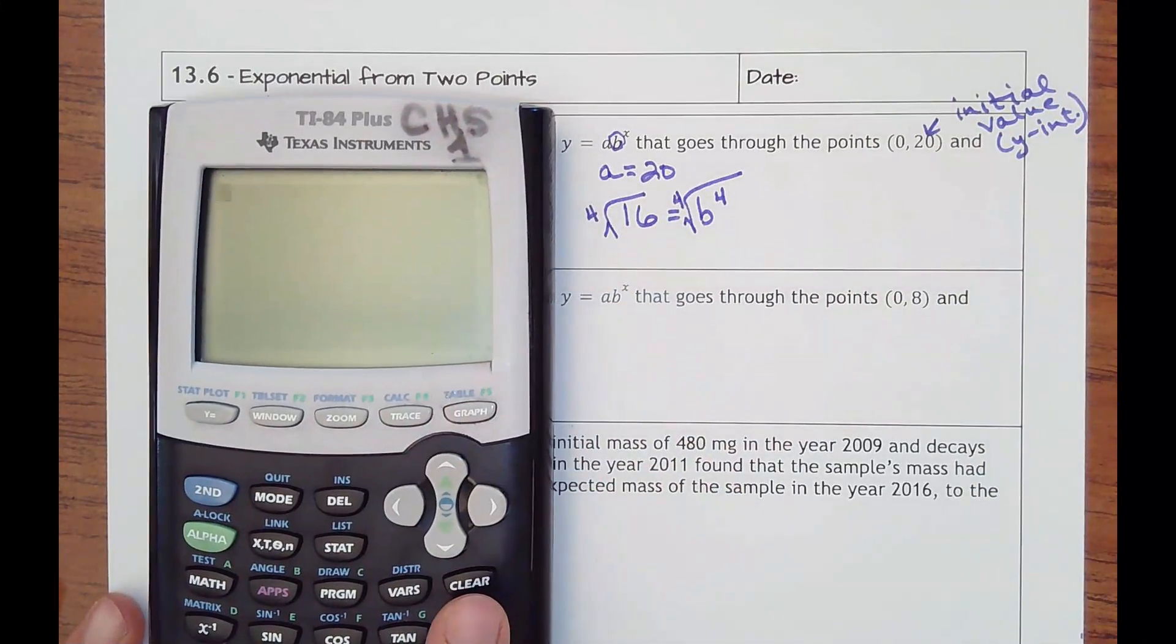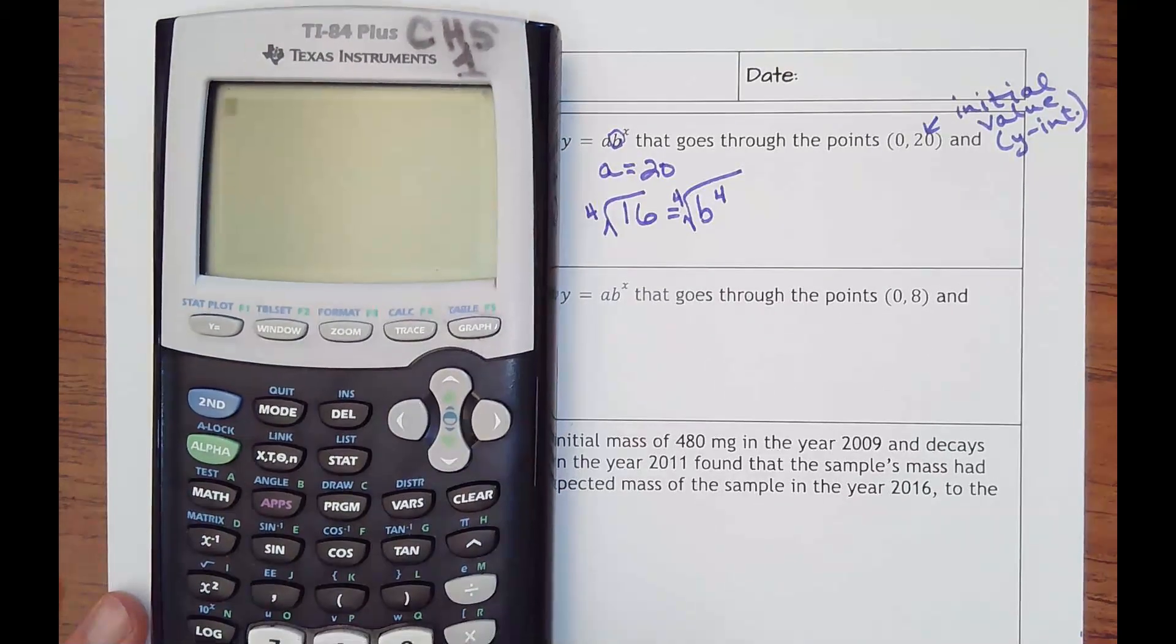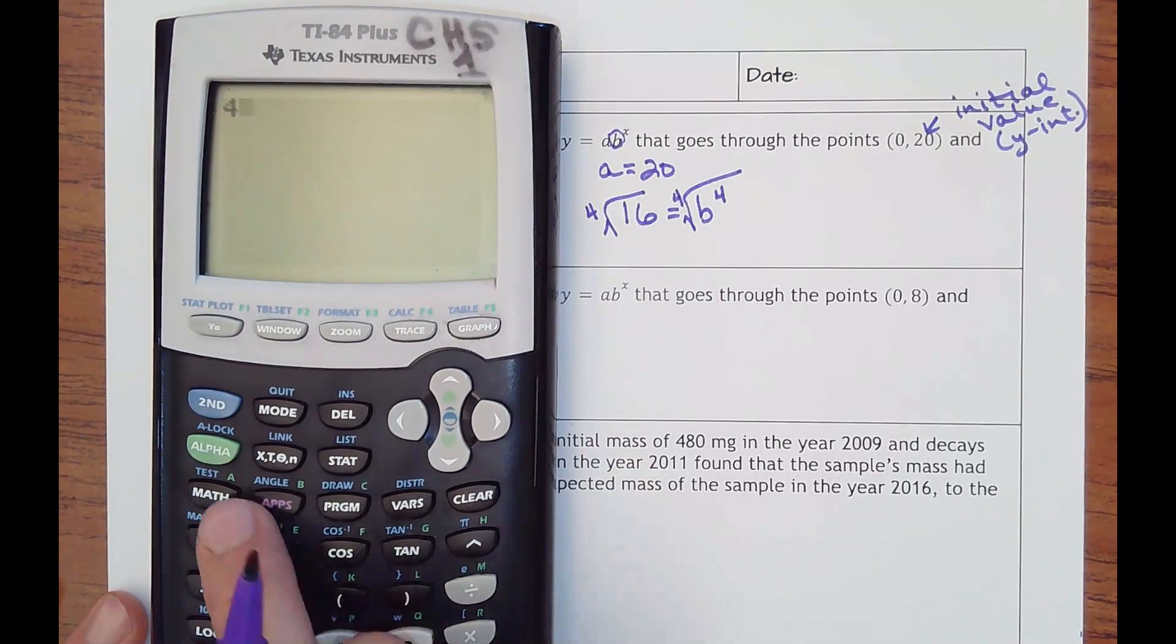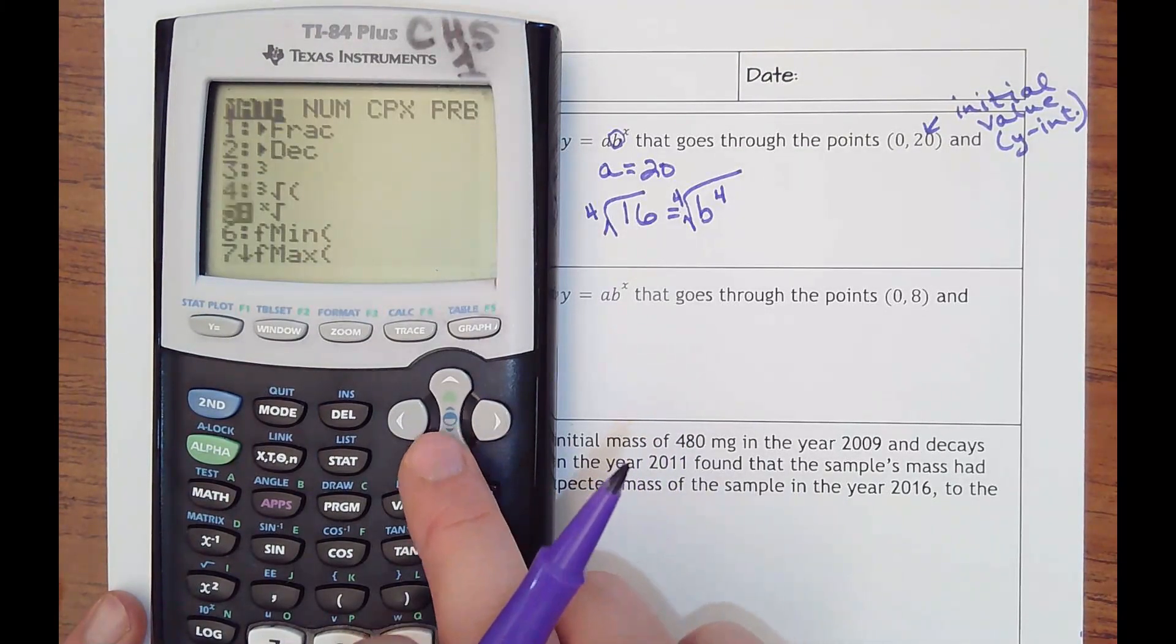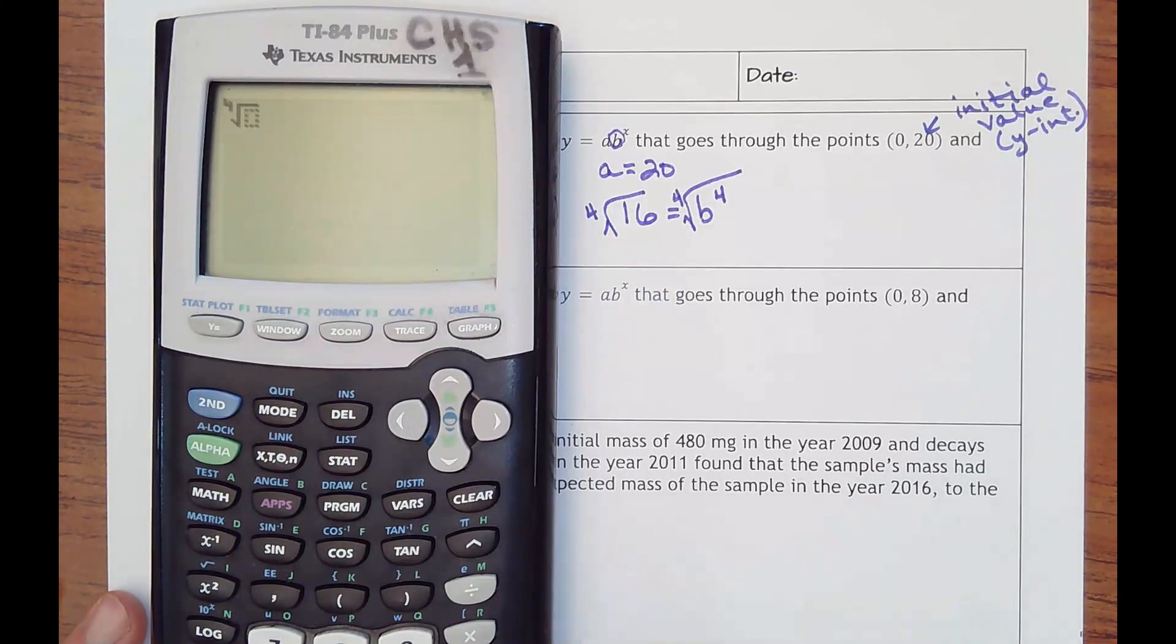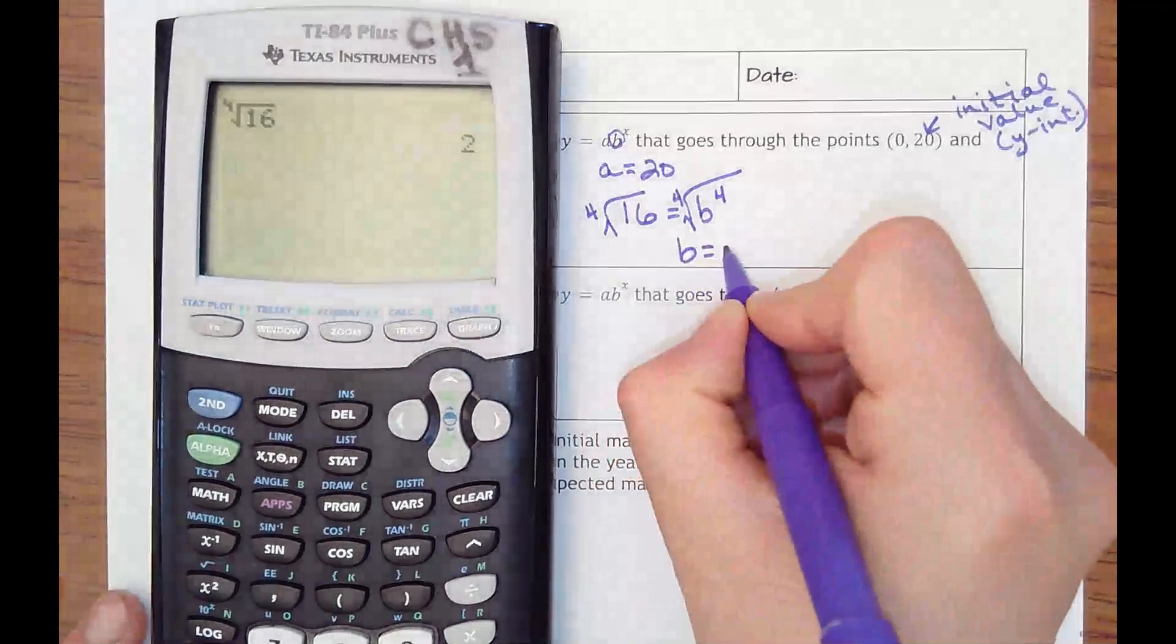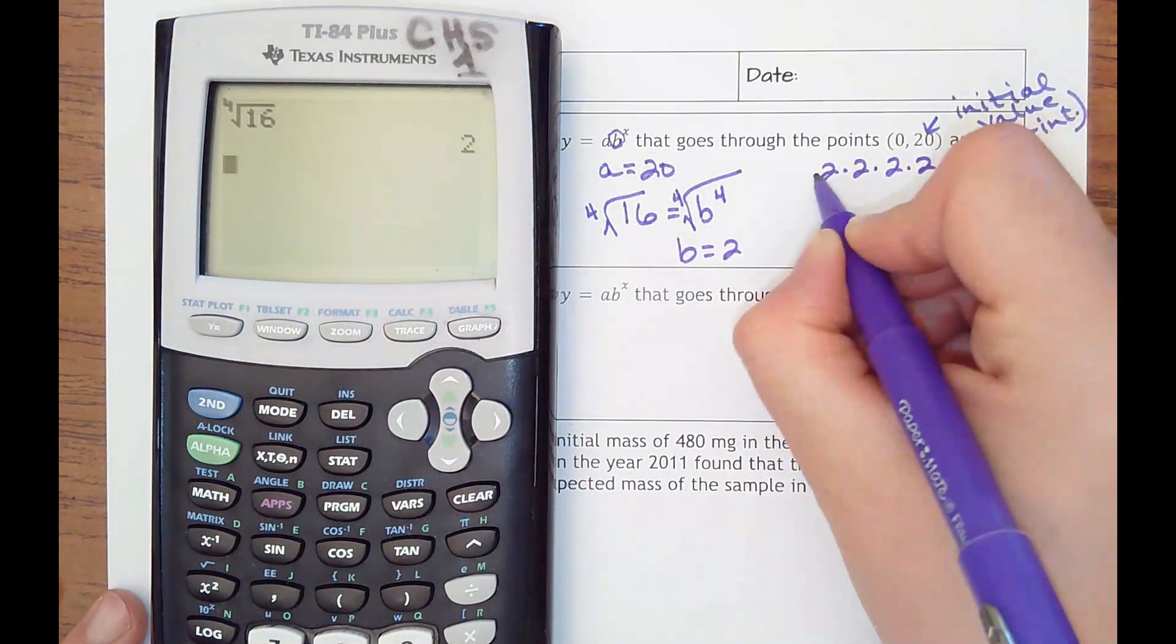This is kind of tricky to think - 4th root of 16. That's saying what number times itself 4 times is 16. If you want to do it on a calculator, you have to hit 4 first, then math, and then it's option 5 with a little x in front of the radical. So I'm doing 4th root of 16, which should be 2, because 2 times 2 is 4 times 2 is 8 times 2 is 16.